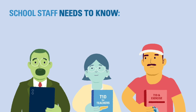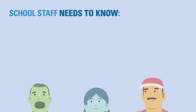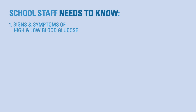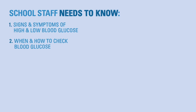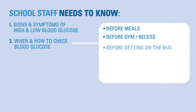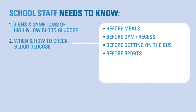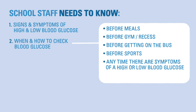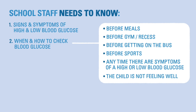The school staff will need to know at least the following pieces of information: the signs and symptoms of high and low blood glucose, and when and how to check blood glucose using a glucometer or CGM — before meals, before gym class or recess, before getting on the bus, before sports, and anytime there are symptoms of high or low blood glucose or the child is not feeling well.